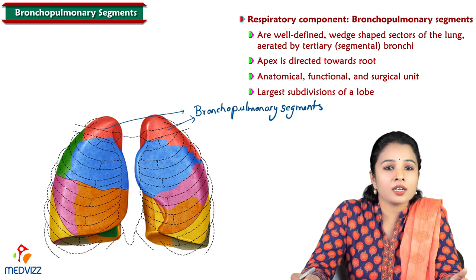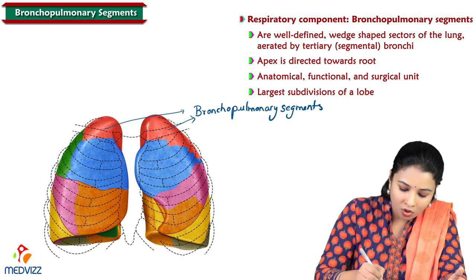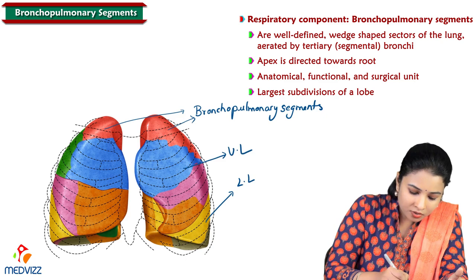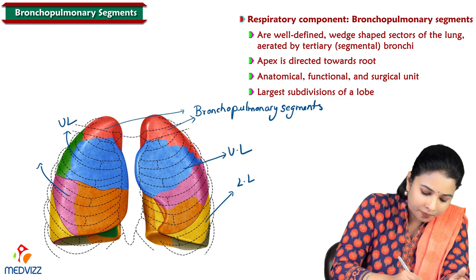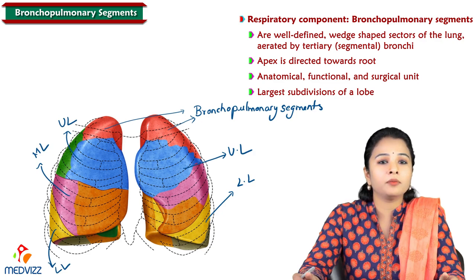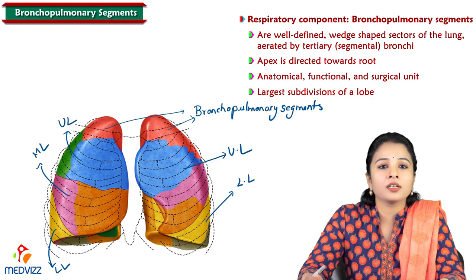The left lung has an upper lobe and lower lobe, and the right lung has an upper lobe, middle lobe, and lower lobe. These lobes are further divided into bronchopulmonary segments.